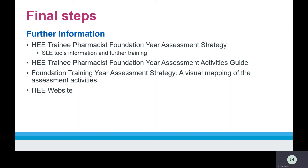For further information on the SLE tools, please visit the HEE website. A more detailed e-learning module on introduction to supervised learning events is available on e-learning for health. The link to the training is available in the HEE trainee pharmacist foundation year assessment strategy on the HEE website. For further information on the learning outcomes, please visit the HEE trainee pharmacist foundation year assessment guide and strategy. This describes the assessment activities which, as a whole, are designed to provide a range of evidence against each of the learning outcomes. There are also many other additional resources on the HEE website, and please do look at the GPHC Foundation Training Manual on the GPHC website.